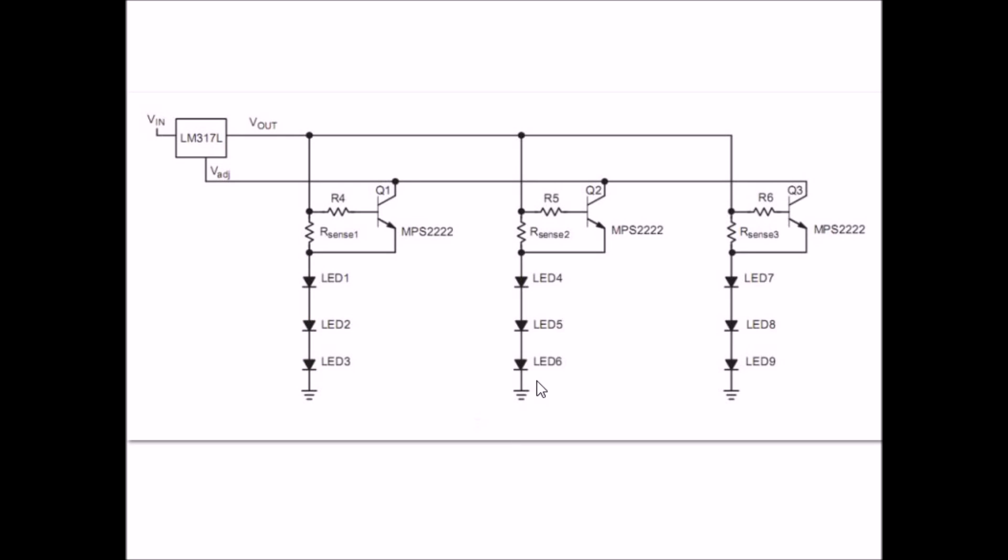So the obvious solution - this is from a factory spec sheet. You use a single LM317, you use separate sense resistors and a transistor on each of the strings. If you lose one string, the current is reduced proportionally. If you lose one string, it will reduce the current by a third and won't affect the other two strings.